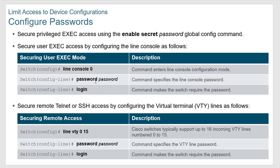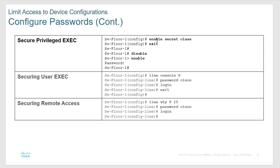The next slide shows the same thing summarized. Line console 0, password and login — remember, 'password' sets it but 'login' turns it on and makes it required. A switch has more VTY lines — 16 people can telnet into the same switch at the same time, so you'd do 'line vty 0 15'. On a router, there are typically only five connections by default, so 'line vty 0 4'. To secure privilege exec, use 'enable secret' followed by the password. To secure user mode, use 'line console 0', password, login. To secure remote access, use 'line vty 0 4' or '0 15' on a switch, password, login.